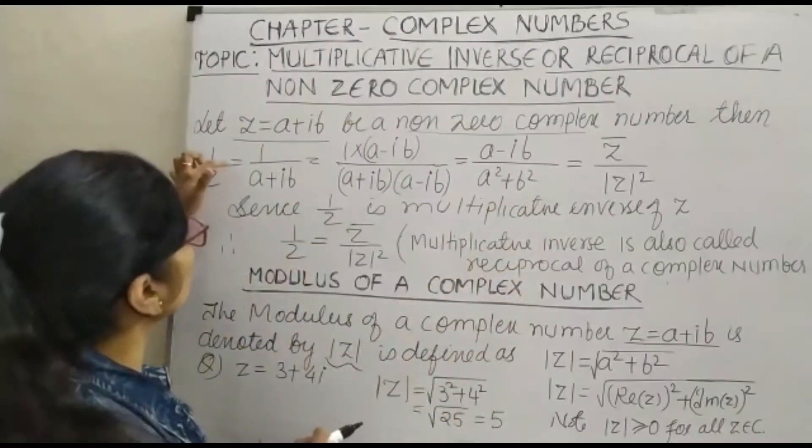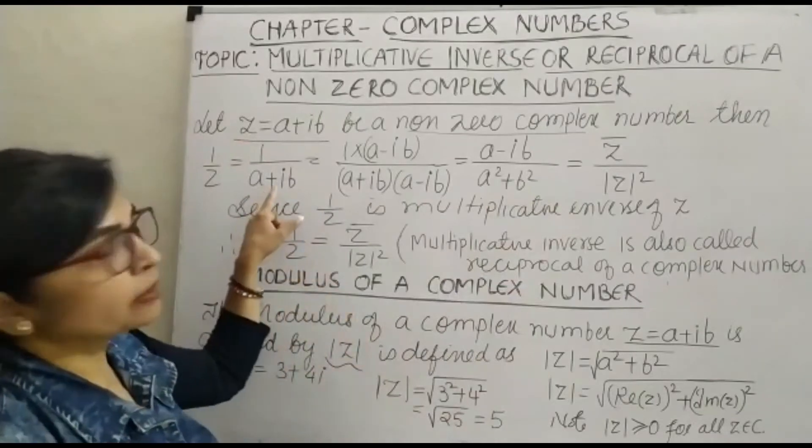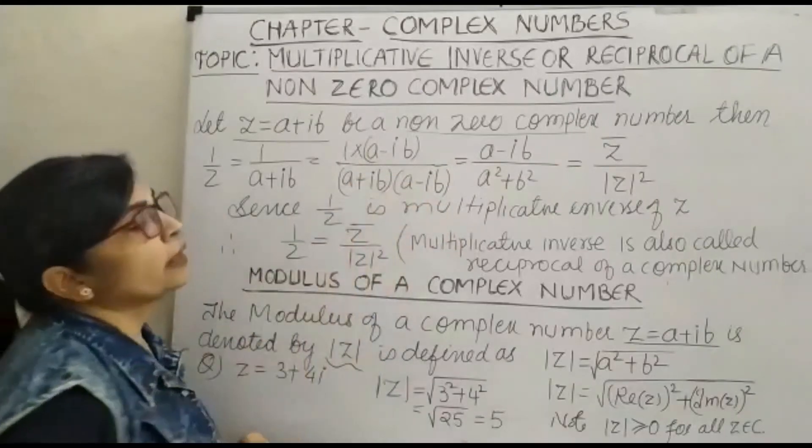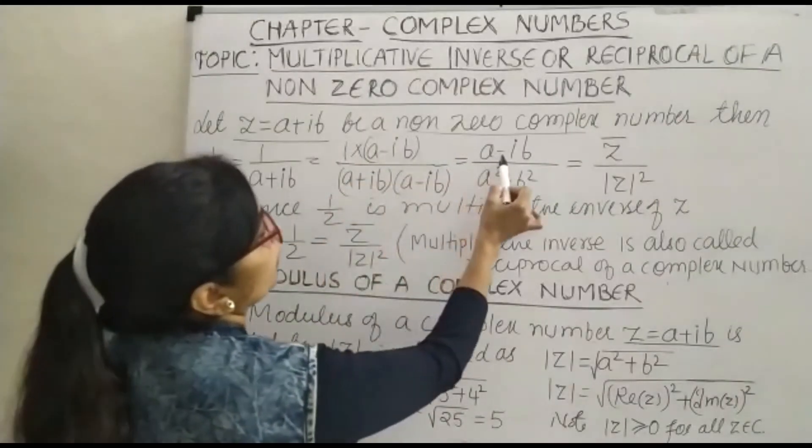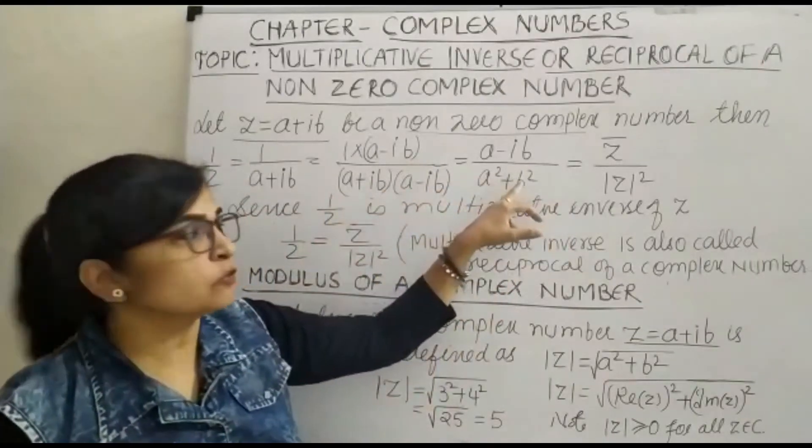Now 1 upon z equals 1 upon a plus ib. We rationalize by multiplying a minus ib in numerator and denominator. This takes the form a minus ib upon a squared plus b squared.